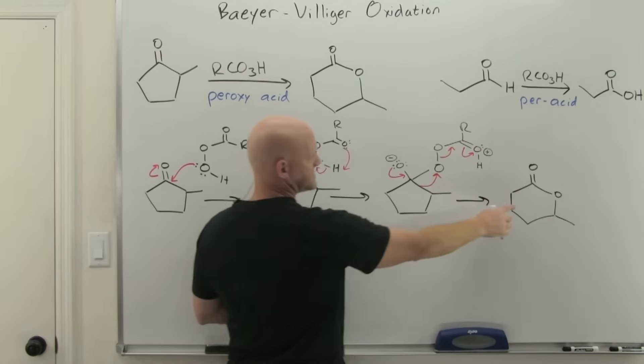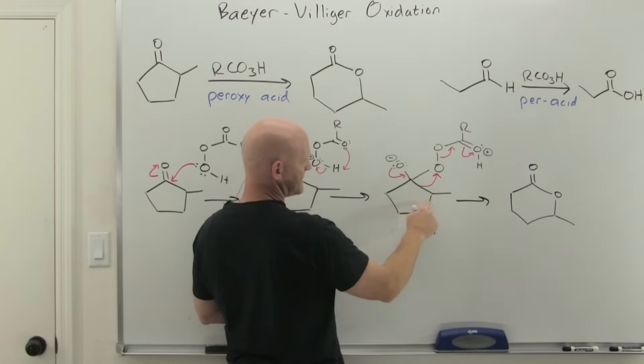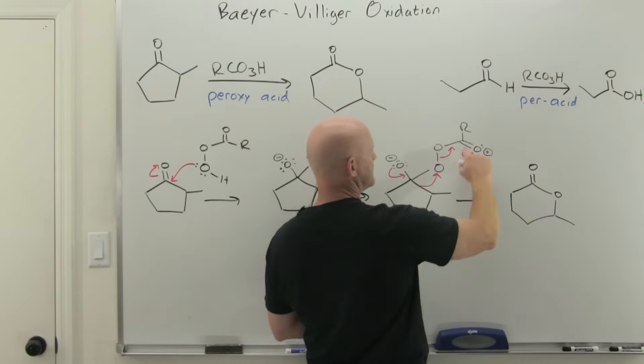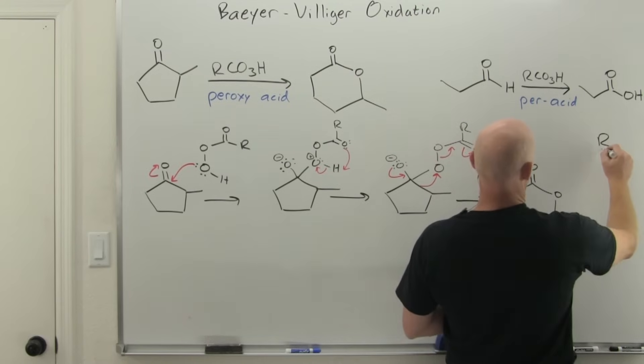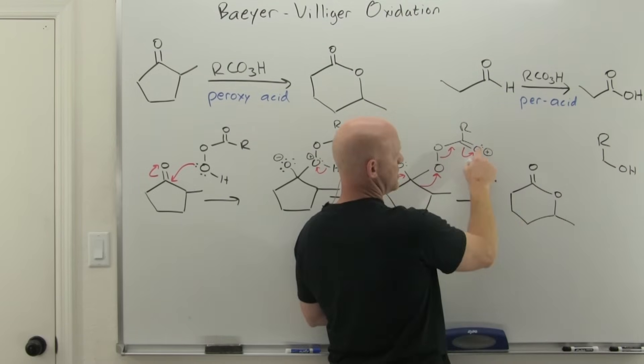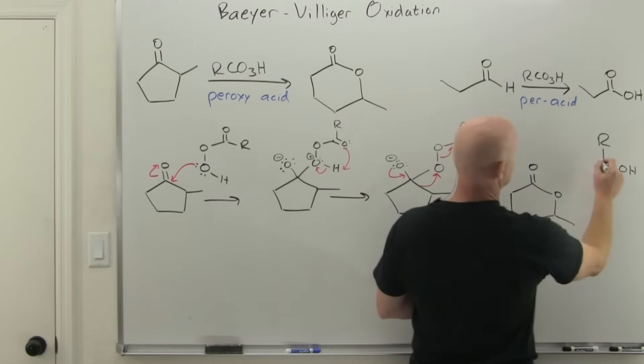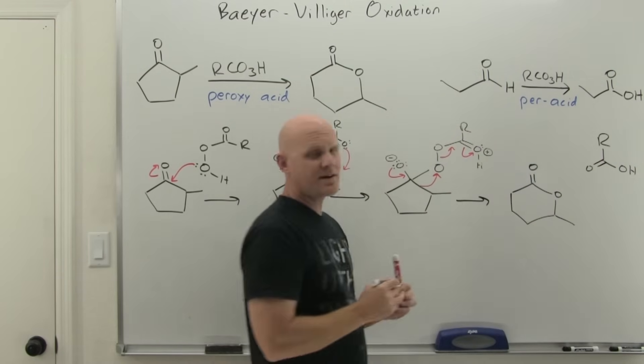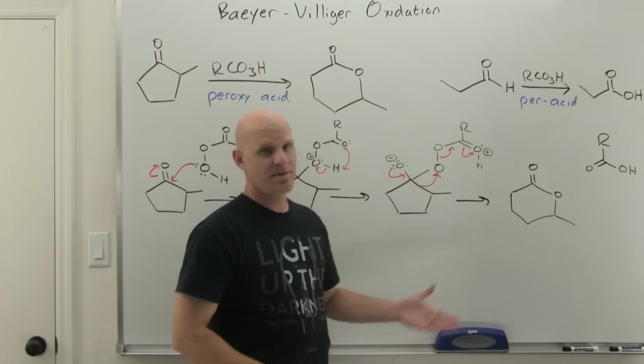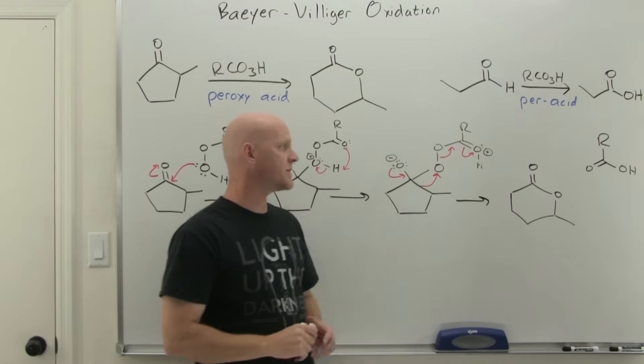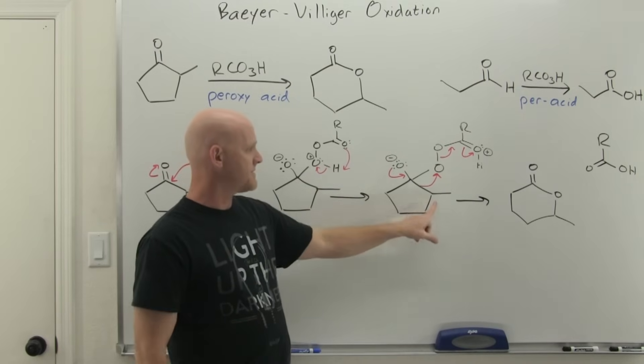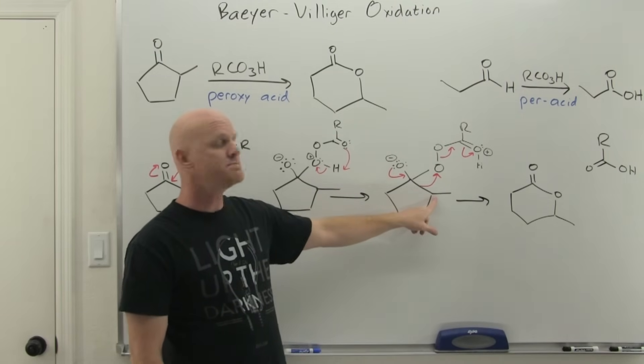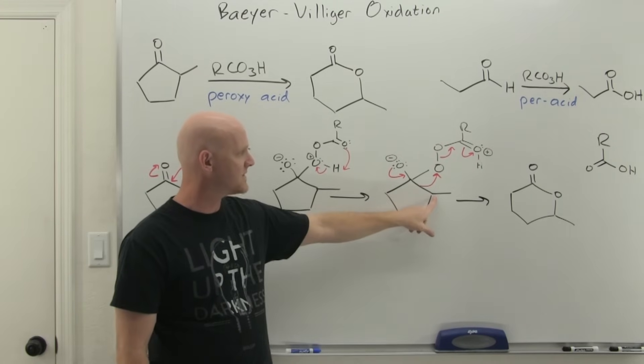The oxygen has inserted itself into the five-membered ring, making it a six-membered ring. Following the reagent around, we now have a single bond to this oxygen (an OH group) but a double bond to this oxygen over here. Our byproduct is a carboxylic acid. That's the whole mechanism for the Bayer-Villiger oxidation.